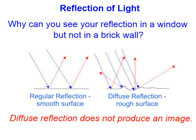It's important to remember that even if a surface appears to be very smooth, at a microscopic level it can in fact be quite rough. A metal pot would be an example of that — it appears to be very smooth but you don't always see your reflection in a metal pot. For an object to cause regular reflection, the sizes of the surface irregularities must be less than the wavelengths of the light that the surface is reflecting.